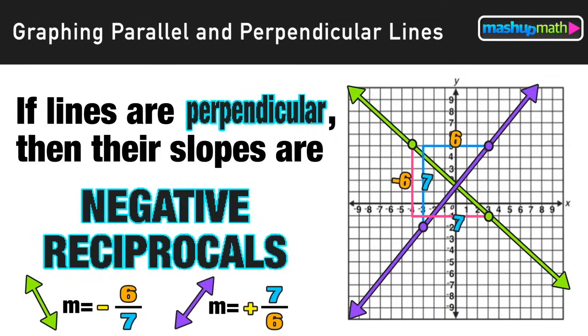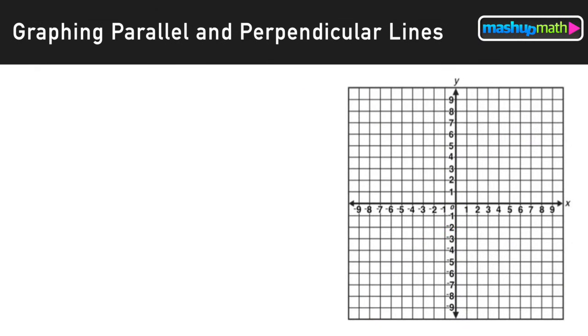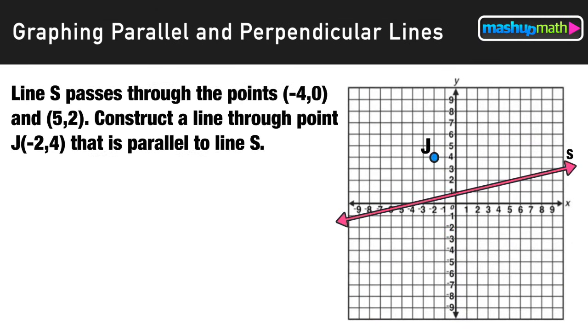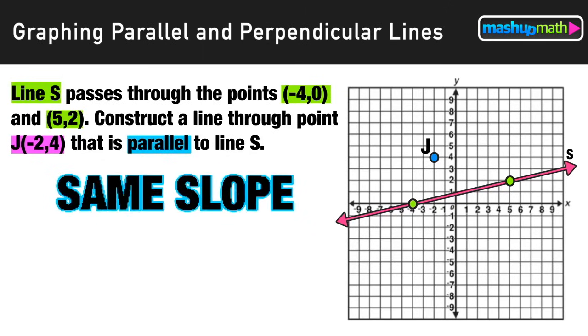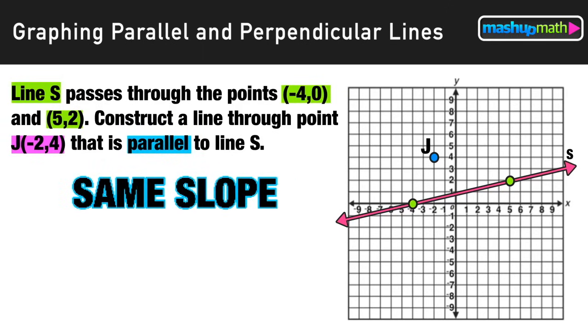So now we'll look at a few examples where we have the opportunity to apply these concepts. On this graph we are provided with a line s that passes through the points negative four zero and positive five positive two. We're also provided with a point j with coordinates negative two four that is not on the line. Now our goal is to construct a line that goes through point j that is parallel to line s. Now the word parallel should tip us off to thinking same slope.